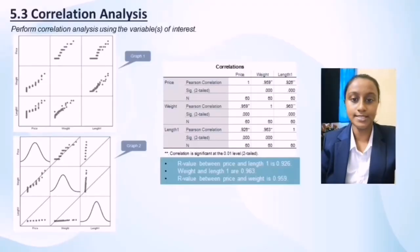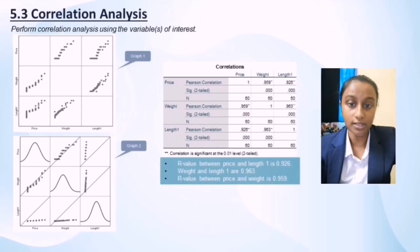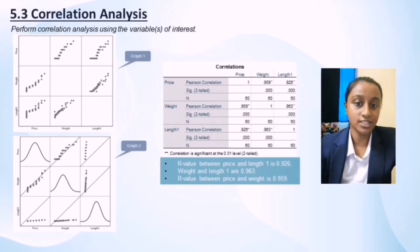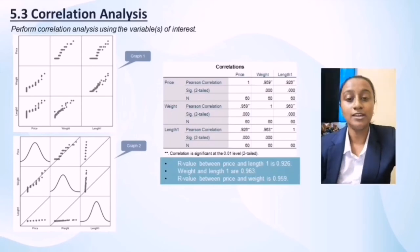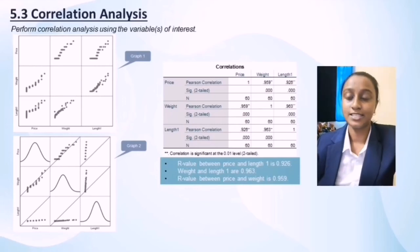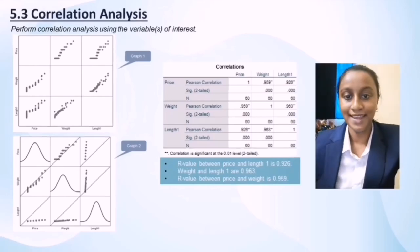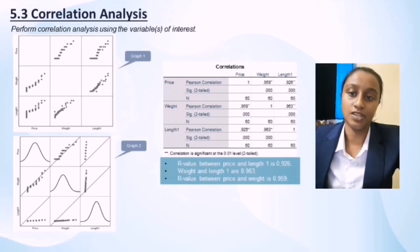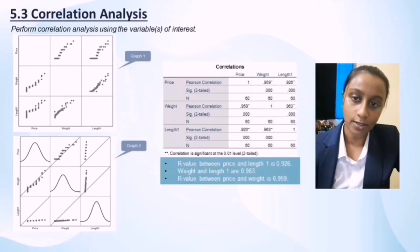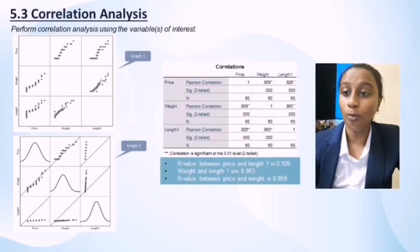Section 5.3 is correlation analysis. We present two scatter plot matrices regarding graph 1 and graph 2. Graph 1 shows length 1, weight and price, indicating an increase in weight and vertical length per year and an increase in sales price. Graph 1 shows the scatter plot matrix before adjustment to a 200-degree maximum to display a straight line, while graph 2 shows it after adjustment. From the correlation table, at the 0.01 significance level, the R value between price and length 1 is 0.929, considered a moderate correlation. The R value between weight and length 1 is 0.963, representing a stronger association. Thus, length 1 is associated with both price and weight, and the R value between price and weight is 0.959, indicating no problem with multicollinearity.